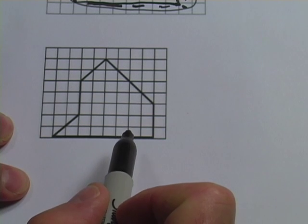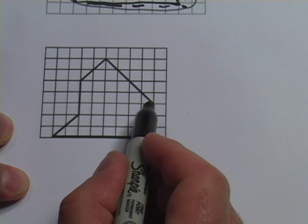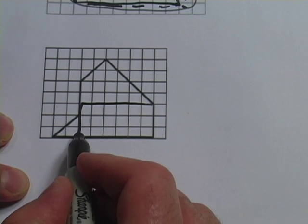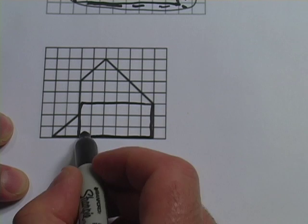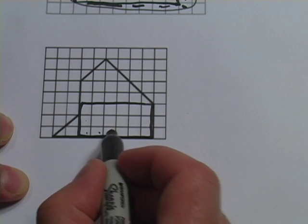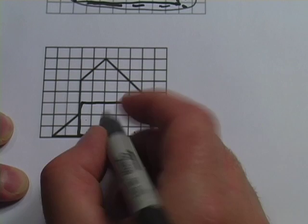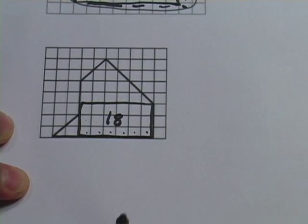First thing I'm going to do is see what kind of boxes I can draw in here to make some of this easy. So there's a box that is 1, 2, 3 by 1, 2, 3, 4, 5, 6. 6 times 3 is 18. So that's good.